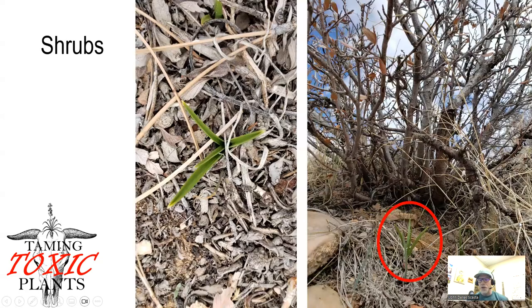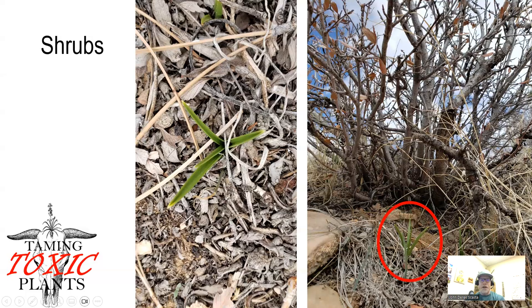Finally, it can grow under shrubs. In this picture here, I have a red circle around a death camas growing right up under a mountain mahogany shrub. And in the picture on the left, you can see the litter on the ground — many of these are mountain mahogany leaves. It also will occur in black sagebrush-dominated areas, so it can come up in these shrub-dominated sites.